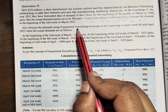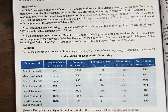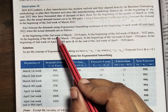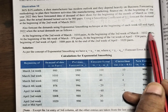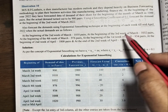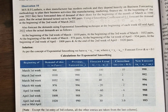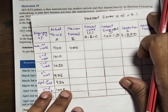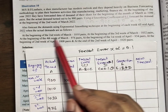Also, we need to forecast the demands using the exponential smoothing technique at the beginning of each week till mid-April 2022. The actual demand data given is: at the beginning of the second week of March — 1010 pairs; third week of March — 1000 pairs. This actual demand data is provided, and we are going to set up a tabulation to calculate the forecast week by week.